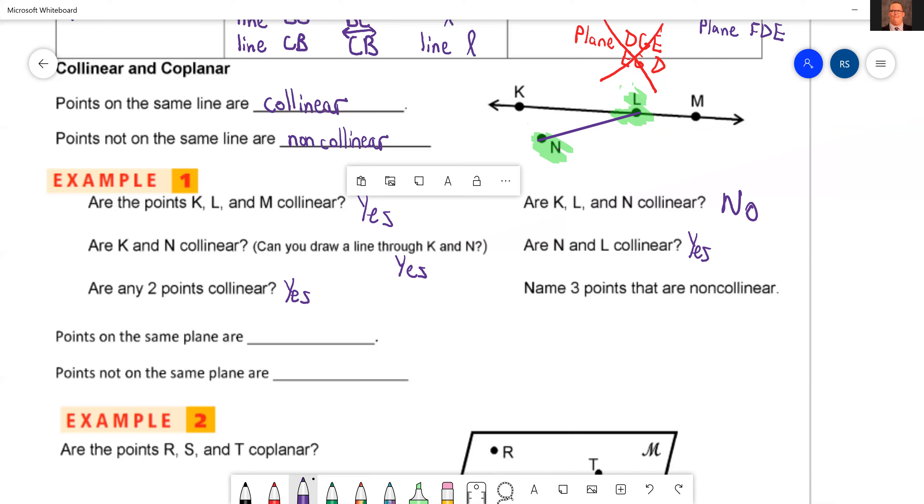Okay, so now the last one on this example asks us to name three points that are non-collinear. What does non-collinear mean? Not on the same line. So basically, you can say N because it's not on that line at all, and then pick any of the other three. I'm going to say N, K, and L. You can use L and M if you want to.